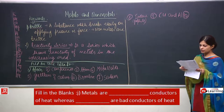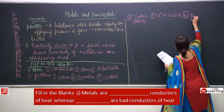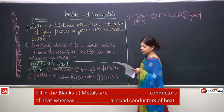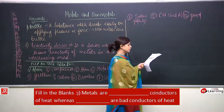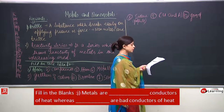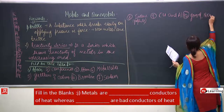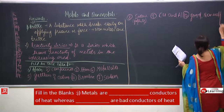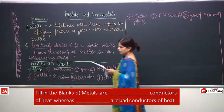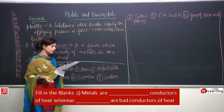Tenth: metals are dash conductors of heat — we all know this. Metals are good conductors of heat whereas non-metals are bad conductors of heat. There is no need to explain further, so we are proceeding forward.